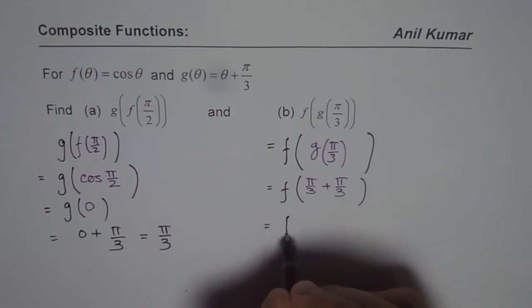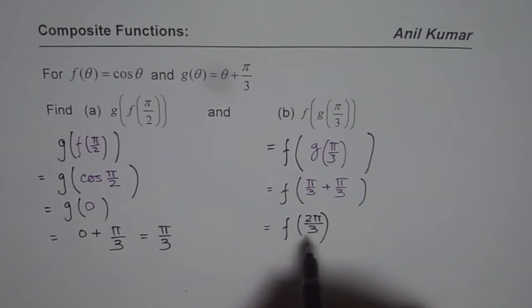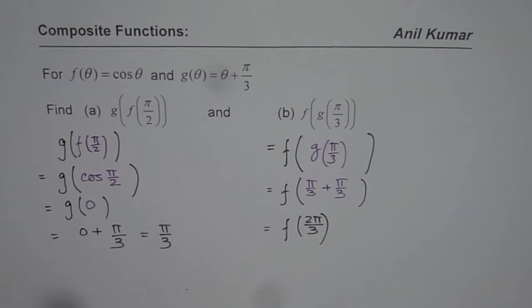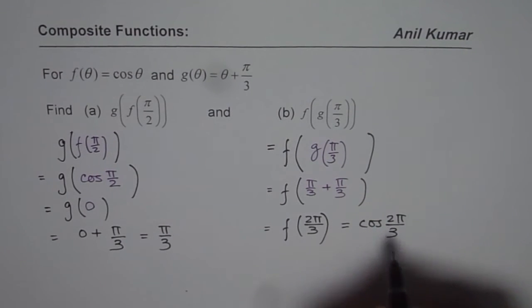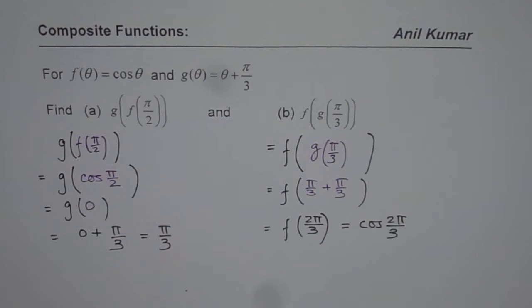We can write this as f(2π/3). Now it means that I have to substitute 2π/3 in f(θ). So I can write this as cos(2π/3). Now what is cos(2π/3)?